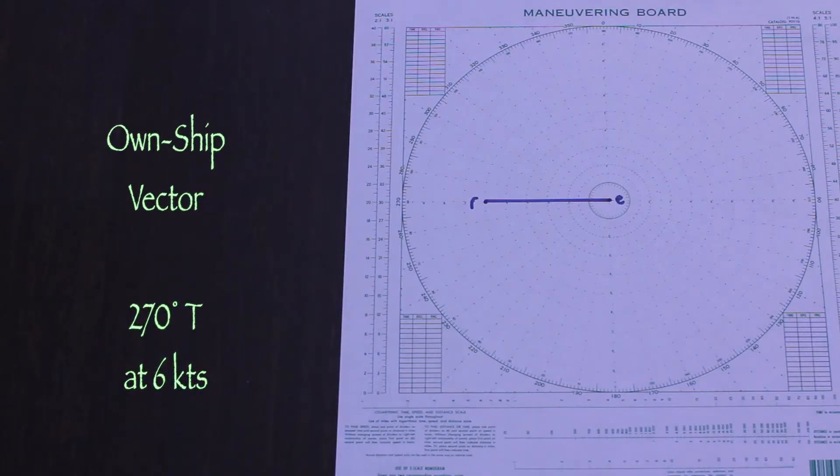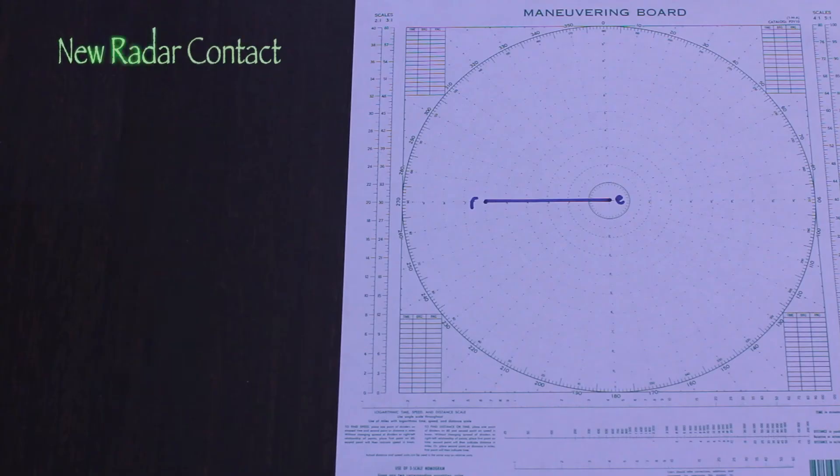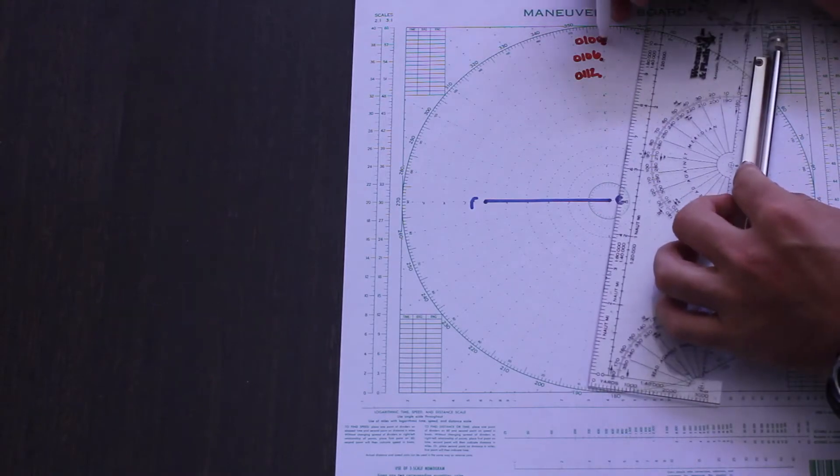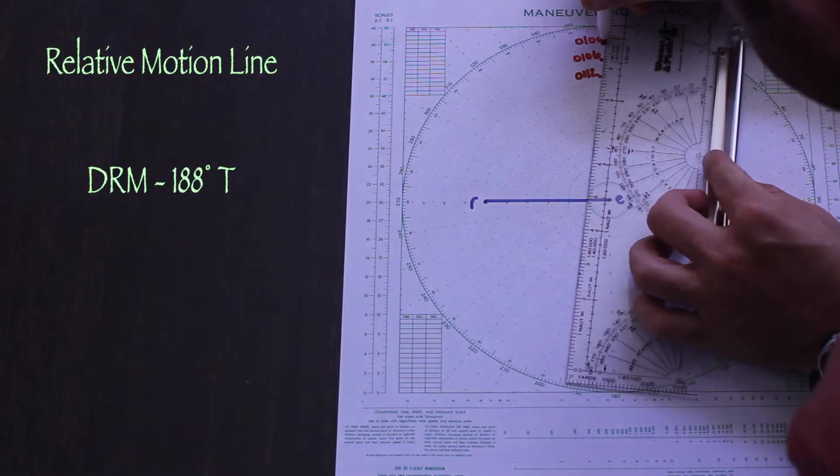The first step in any problem is to determine the true course and speed and possibly the CPA, just like last episode. So we'll plot this contact and determine its direction of relative motion, which turns out to be 188 degrees true.